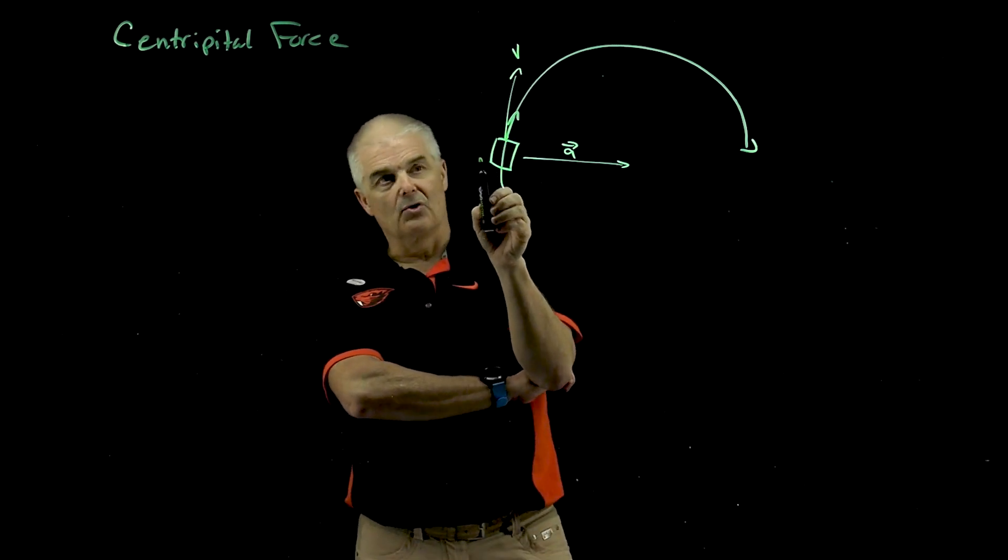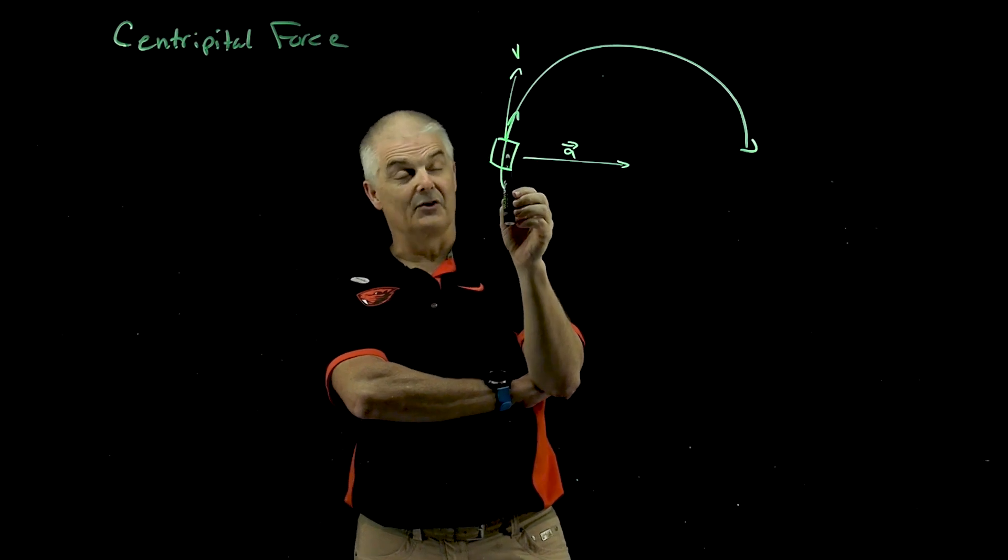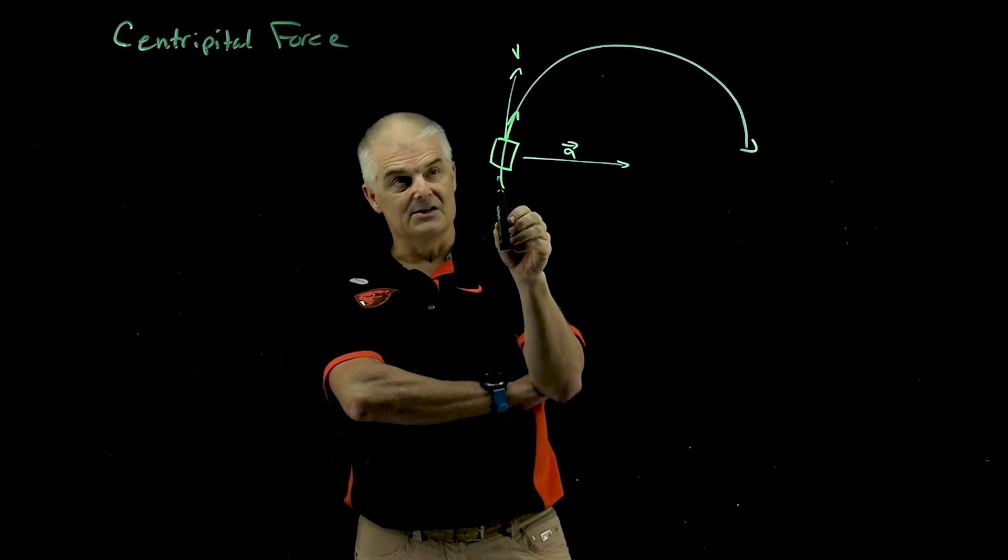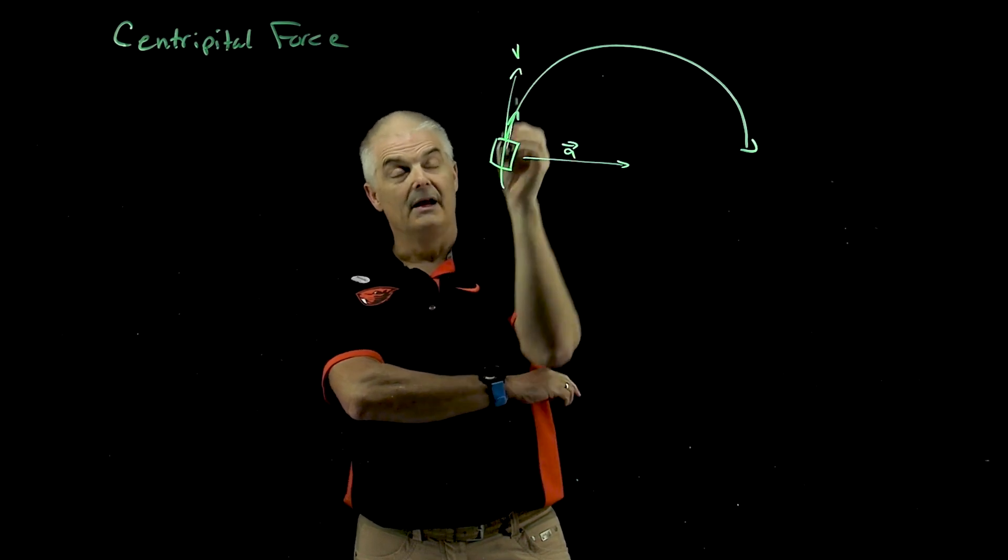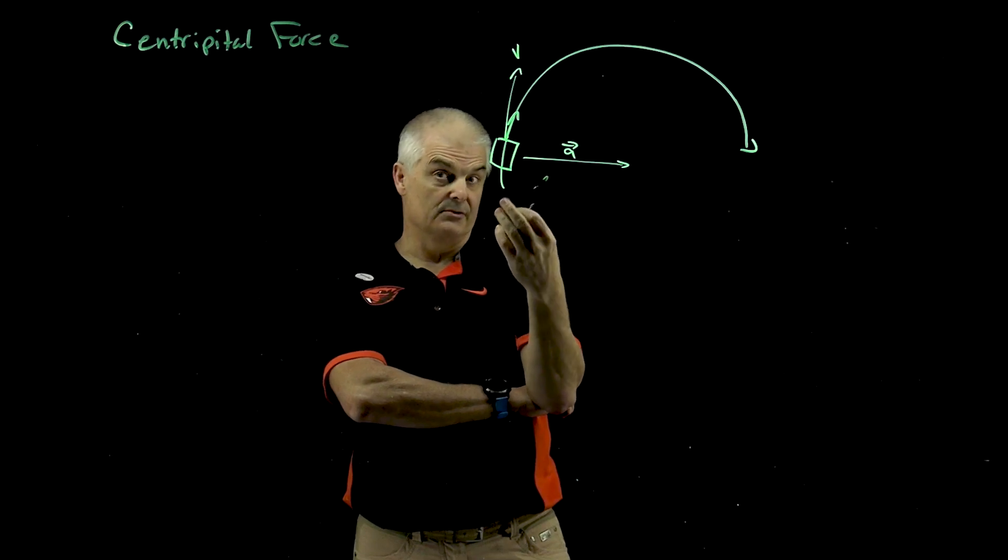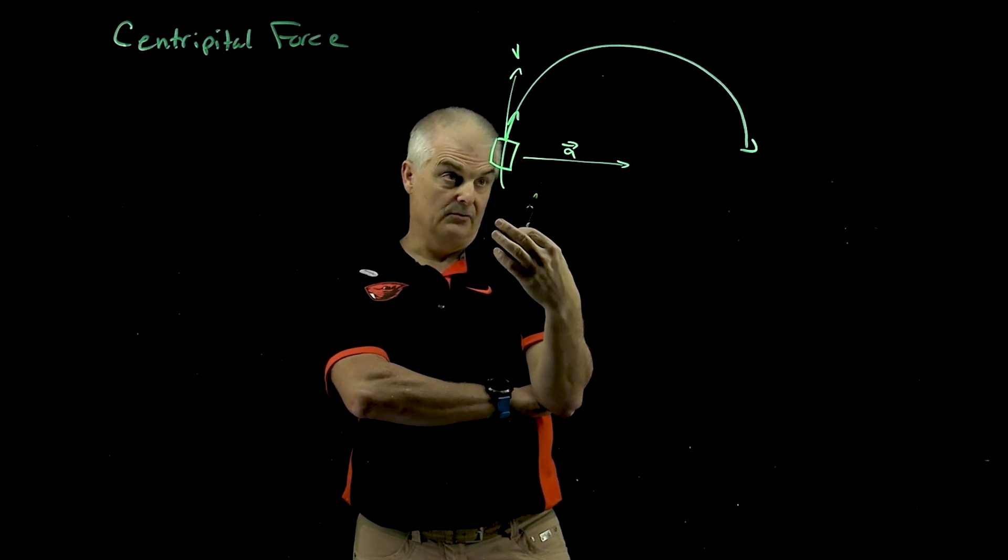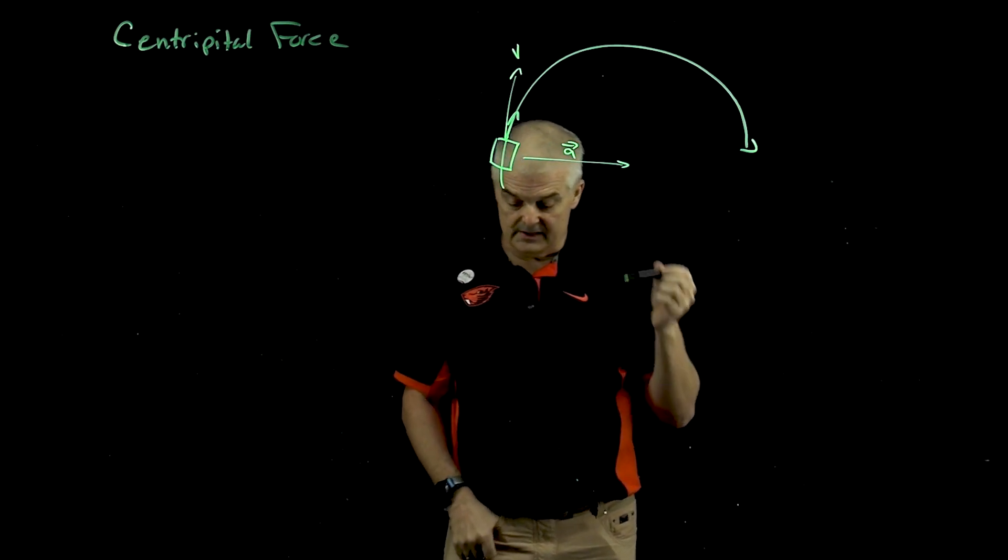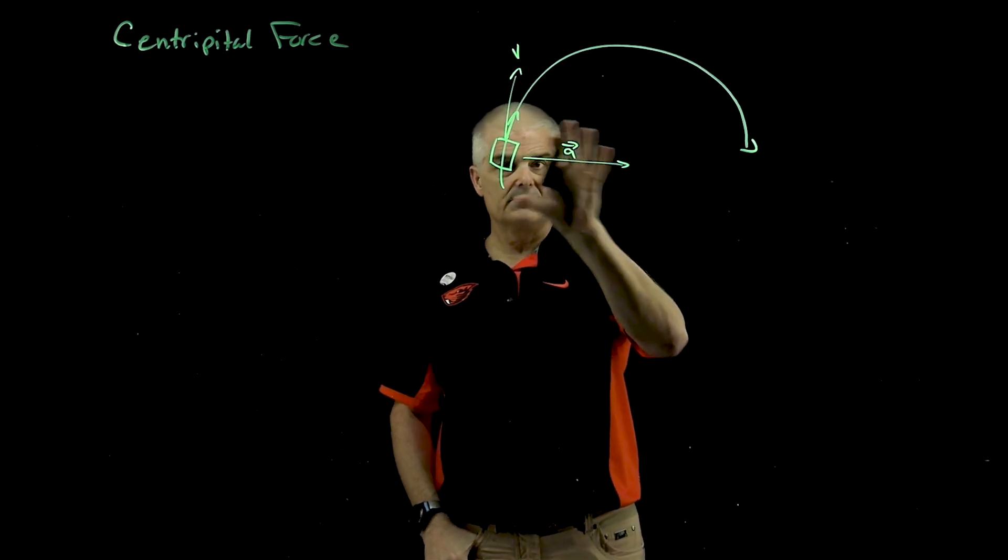That's why when you go around the corner, I mean, we're in Houston, so we don't see this very often, but if you're going around the corner on an icy street and it's super slick, your car will continue to keep going straight and it will crash into something and not good. And so that's why curves can be very dangerous in an icy road because they have a very, very low coefficient of static friction. But let's take a look at this situation.